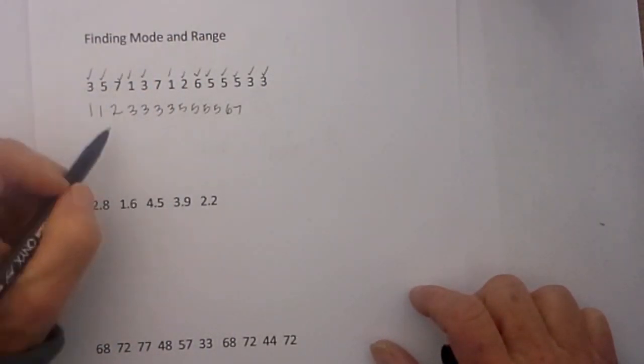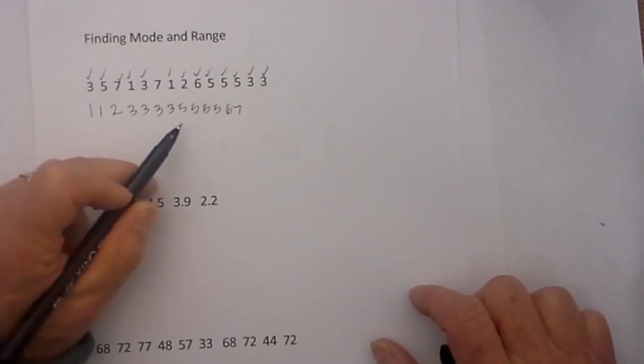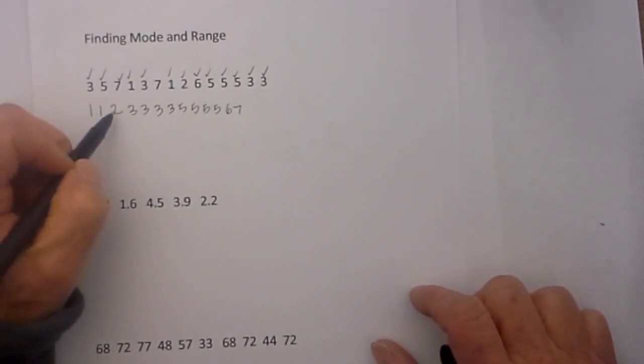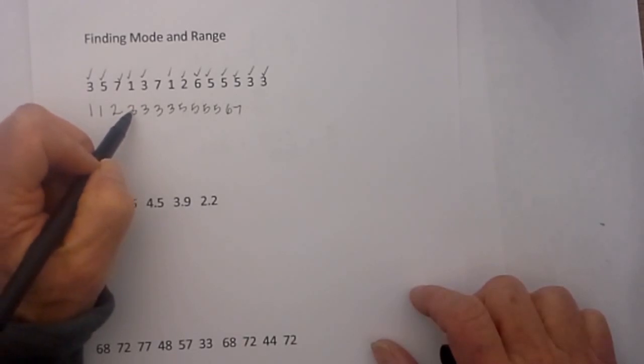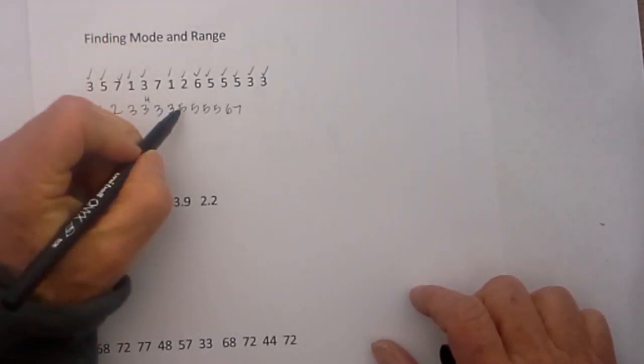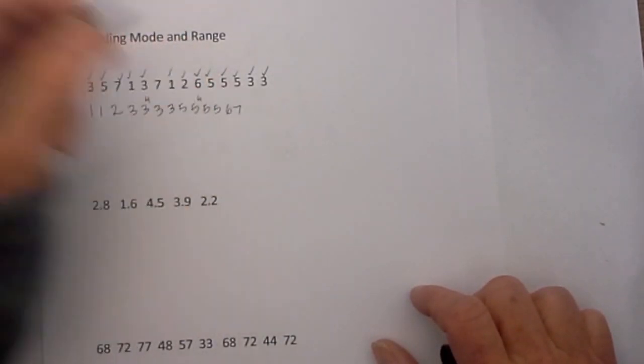Now the mode you can have one mode, more than one mode or no mode. In this particular example there are 2 1's and 1 2, and if you count you have 4 3's but you also have 1 2 3 4 5's, and only 1 6 and 1 7.